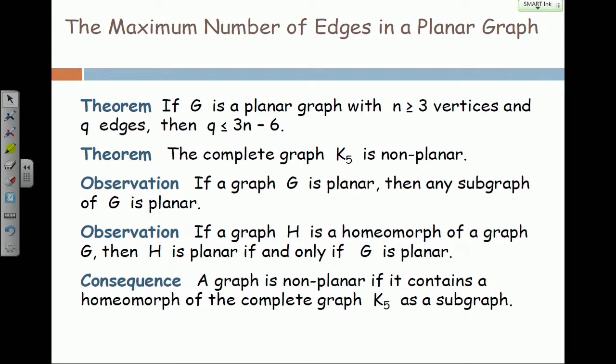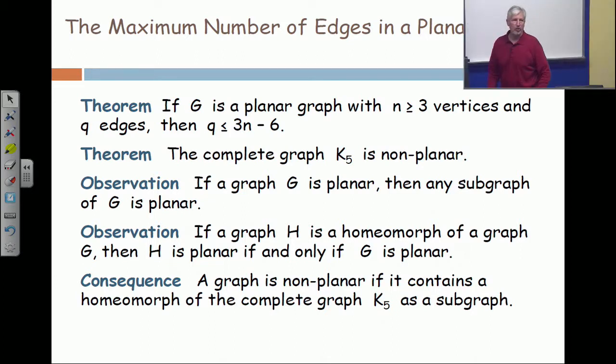And why is that? Because K5 has five vertices but it has 10 edges—10 because 10 is 5 choose 2. So it has 10 edges, but 10 is bigger than 3 times 5 minus 6. 3 times 5 minus 6 is 9. And so the complete graph on 5 vertices cannot be planar.